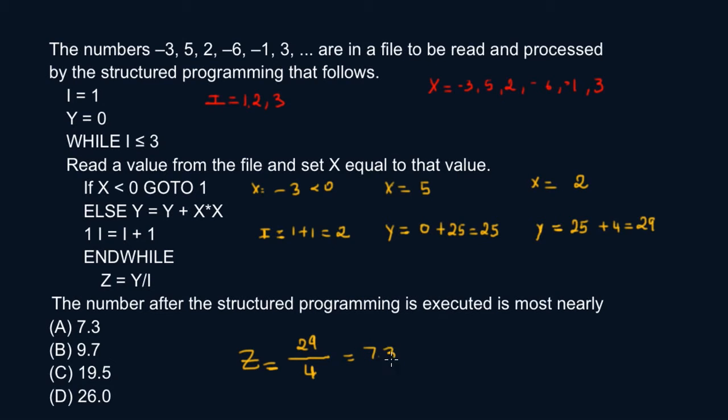So your answer is A. I could totally see students dividing by three here, and your answer is going to be on the test, so you got to be careful. You've got to increment the value of I before you can divide it for your end result. So here, your final answer is 29 over four. Your final answer is 7.3.